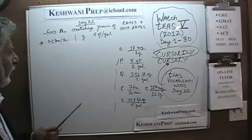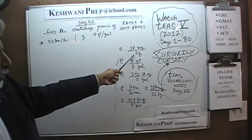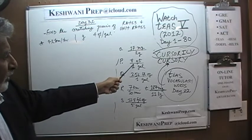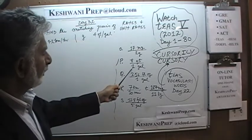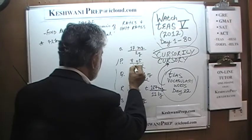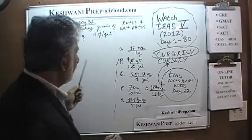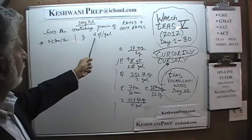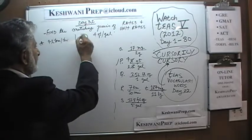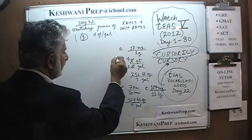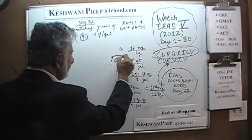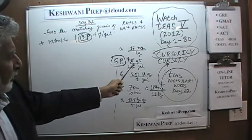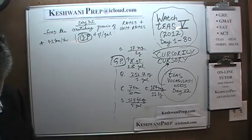Entry P says 8 quarts per 2 gallons. We divide top and bottom by 2. The bottom becomes 1 gallon, and 8 ÷ 2 = 4. So 4 quarts per gallon. Entry G says 4 quarts per gallon — right there. G and P match. That pair is done.